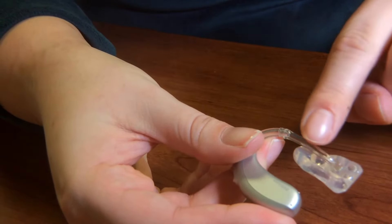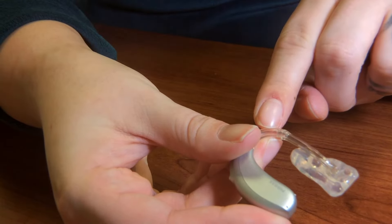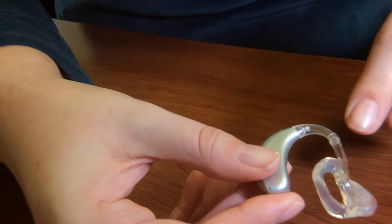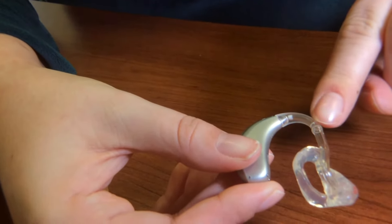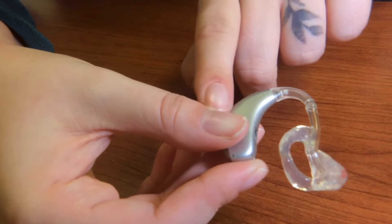This is the tubing. It connects the ear mold to the tone hook. This is the tone hook. It connects the tubing to the body of the hearing aid.